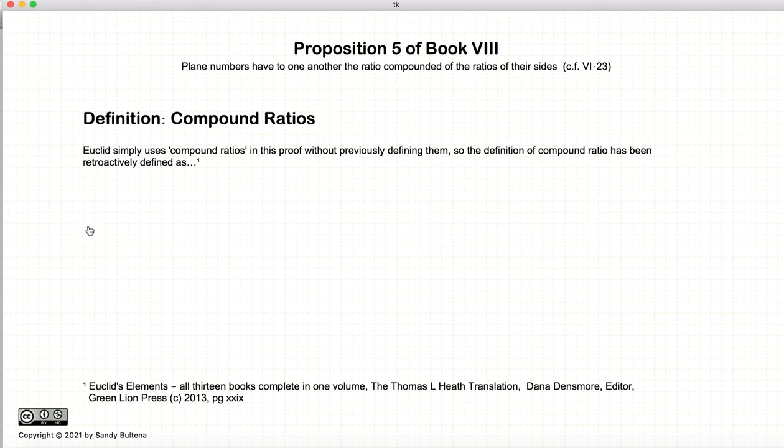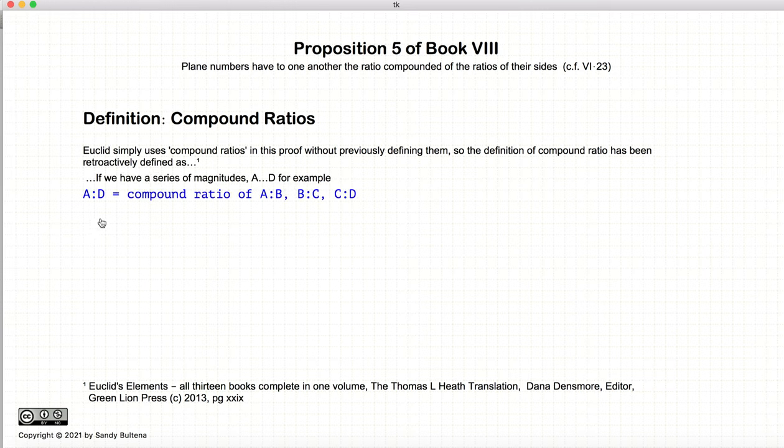The other thing that we need to define is compound ratios. Now, in Euclid's books, he did not define them explicitly, but they have been inferred what he meant by that just by looking at all the translations. So, if we have a series of ratios of A to B, B to C, and C to D, then A to D, the ratio A to D, would be the compound ratio of these three ratios.